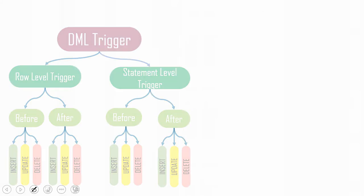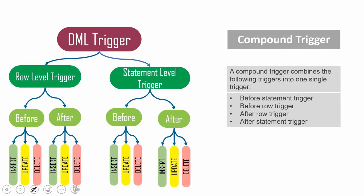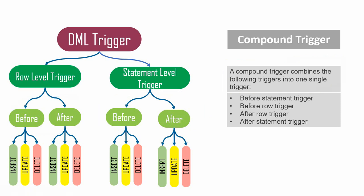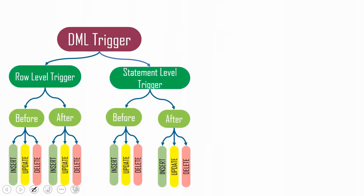A compound trigger, in a single line, combines all four triggers — statement-level before, statement-level after, row-level before, and row-level after — into a single trigger. A compound trigger combines the following into one: before statement trigger, before row-level trigger, after row-level trigger, and after statement-level trigger. Let me show you the syntax of a compound trigger.